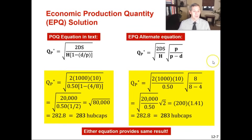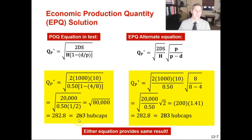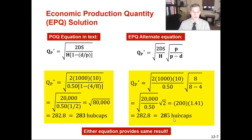Using the EPQ formula with the given information, you take the square root of 80,000, which gives 282.8, rounded up to 283 hubcaps. Using the preferred alternative approach: first calculate EOQ = 200 units, then multiply by 1.41 — derived from the square root of p ÷ (p − d) = 8 ÷ (8 − 4) = 2, and √2 ≈ 1.41. The result is 283 hubcaps. Both formulas give the same answer.